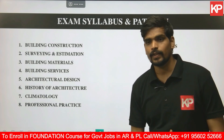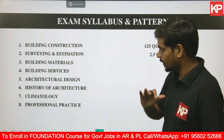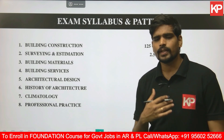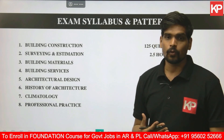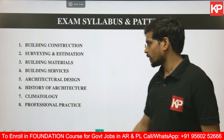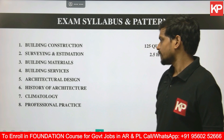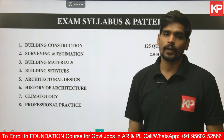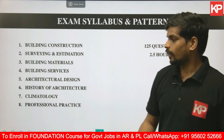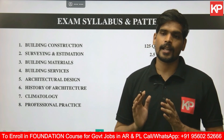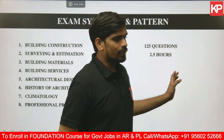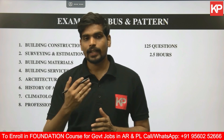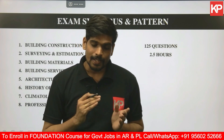Section 5 is Architectural Design, covering the basics of architecture and spatial planning. Section 6 is History of Architecture, covering various civilizations and the evolution of architecture across historical phases. Section 7 is Climatology, covering climate-responsive design, solar architecture, sun path, sunlight, and orientation. Section 8 is Professional Practice, covering codes of practice, standards, and work ethics. These eight sections will be covered across the 125 questions.